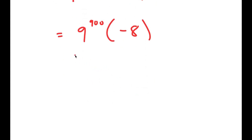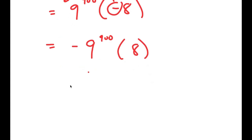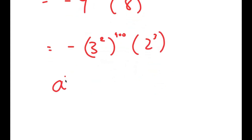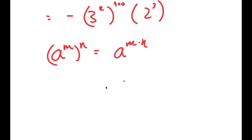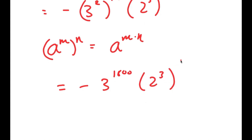We can't get the exact value because 9^900 is such a big number, but we can get the simplified form. I'm going to move the negative sign to the front to get negative 8 times 9^900. Since 9 equals 3 squared, this becomes negative 3 squared to the power of 900 times 2^3. Using the property (a^m)^n = a^(m×n), I get negative 3^1800 times 2^3. This is the final simplified solution.